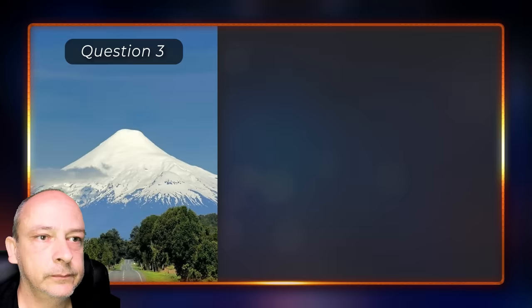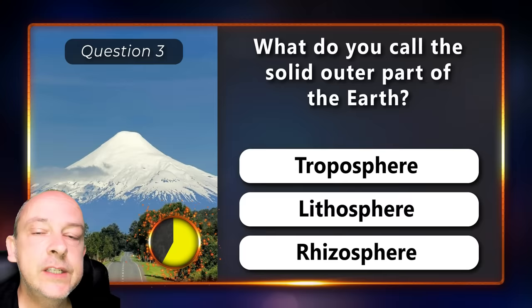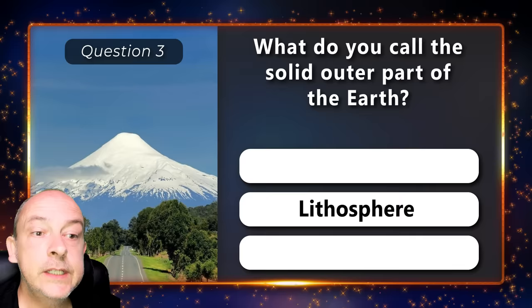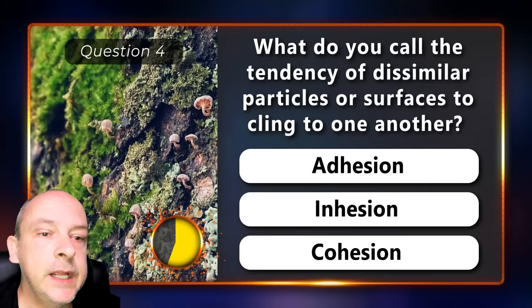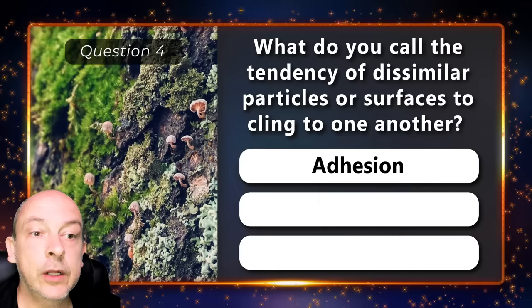What do you call the solid outer part of the earth? The troposphere, lithosphere, or rhizosphere? What do you call the tendency of dissimilar particles or surfaces to cling to one another? Adhesion, inhesion, or cohesion? The correct answer is adhesion.